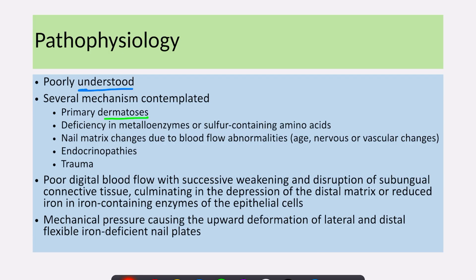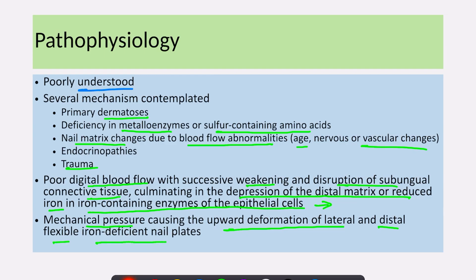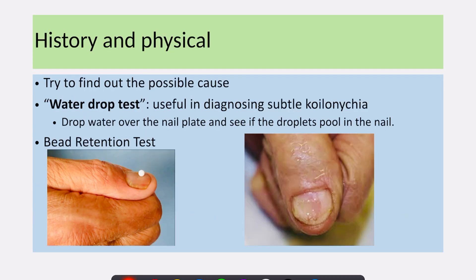It is thought to be because of primary dermatosis, or deficiency in metalloenzymes or sulfur-containing amino acids. There can be koilonychia because of nail matrix changes due to blood flow abnormalities. Koilonychia can also occur because of trauma and poor digital blood flow with successive weakening and disruption of the soft ungual connective tissue, leading to depression of the distal matrix and reduced iron in iron-containing enzymes in epithelial cells. Another theory mentions that mechanical pressure causing upward deformation of the lateral and distal fleximal iron-deficient nail plates leads to koilonychia.